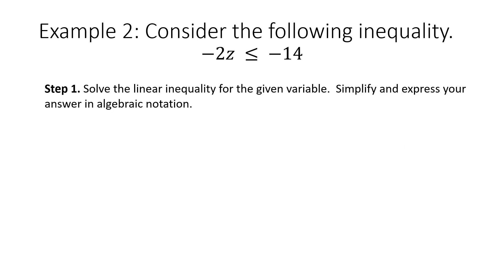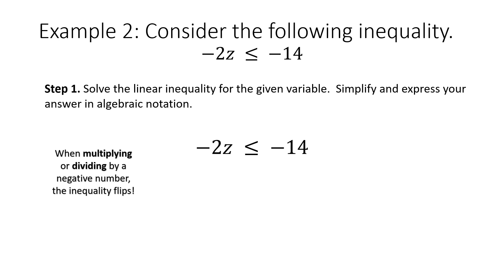Example 2: Consider the following inequality — negative 2z is less than or equal to negative 14. Step 1: Solve the linear inequality. Again, I have multiplication; negative 2 and z are being multiplied, so I'm going to divide. However, there's a rule with inequalities: when you multiply or divide by a negative number, the inequality flips. Since I'm dividing both sides by negative 2, I flip the inequality to greater than or equal to. Negative 14 divided by negative 2 gives me 7, so the answer is z is greater than or equal to 7.